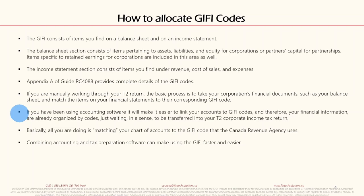We do run a course on income tax T2, and in that course we cover how to link or assign the tax line mapping in accounting software, which we show in QuickBooks. We also show the whole process of how you can export from QuickBooks and import into the software, which we demonstrate in Profile. If your numbers are ready in QuickBooks, they can be directly transferred into the tax software. Assigning GIFI codes in your accounting software is one of the important steps, and combining accounting and tax preparation software makes using GIFI faster and easier.